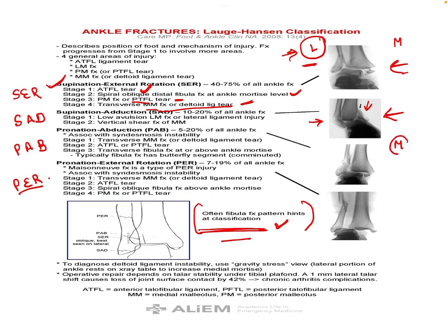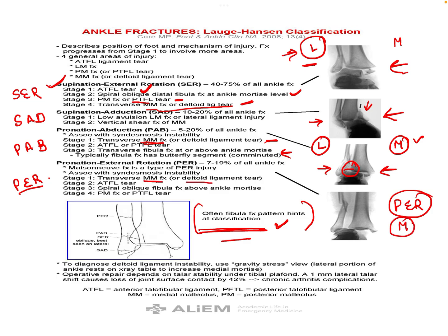In pronation injuries, the medial structures are injured first and lateral structures are injured later. In pronation-abduction: first an avulsion-type transverse medial malleolus fracture, then in PAB2 anterior tibiofibular injury or a comminuted suprasyndesmotic fibula fracture. In pronation-external rotation: injury again begins on the medial side with an avulsion medial malleolus fracture or deltoid ligament injury, then anterior tibiofibular ligament syndesmotic injury, then an oblique spiral high suprasyndesmotic fibula fracture, and lastly the force goes posteriorly causing posterior malleolus or posterior tibiofibular ligamentous injury.